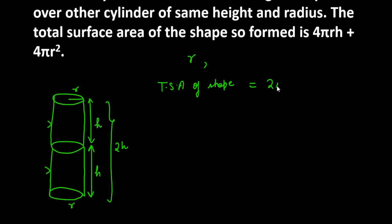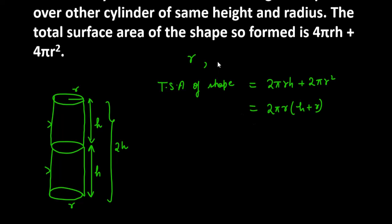The TSA of a cylinder is 2πrh plus 2πr², which can be written as 2πr(h + r), taking 2πr as common. Now the height h has changed — h becomes 2h. So substituting 2h for h, we get 2πr(2h + r).